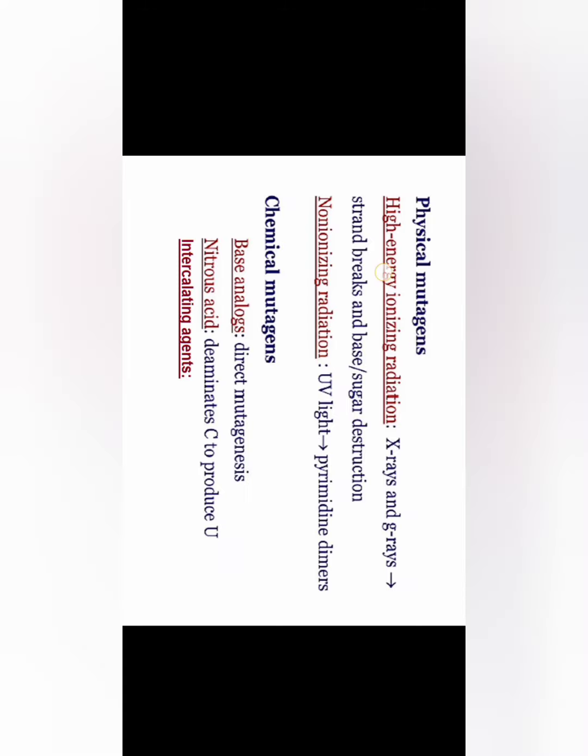What are the different types? Broadly, mutagens can be divided into two types: physical and chemical mutagens. Chemical mutagens are chemical substances like base analogues, nitrous acids, or intercalating agents that can enter between the DNA strands.